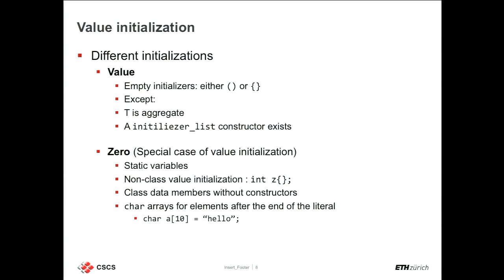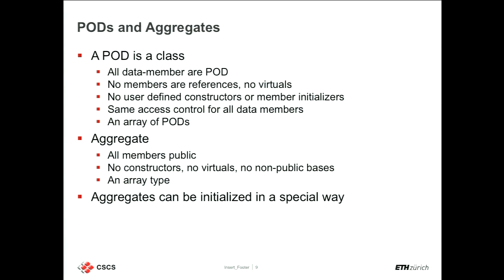So already we see a couple of differences. Empty curly braces call the default constructor for a class; for an integer or fundamental type, you get zero initialization; for an array of chars, it puts zero on the remaining entries. Static variables will also be zero-initialized — if you create a variable at global scope as static, it will be initialized to zero.